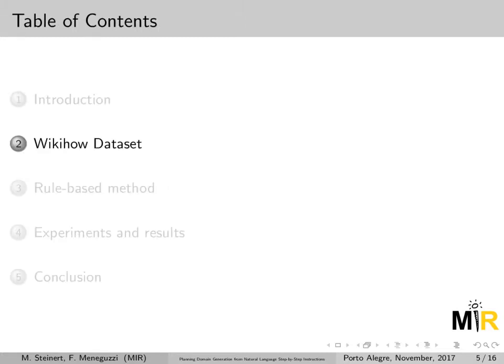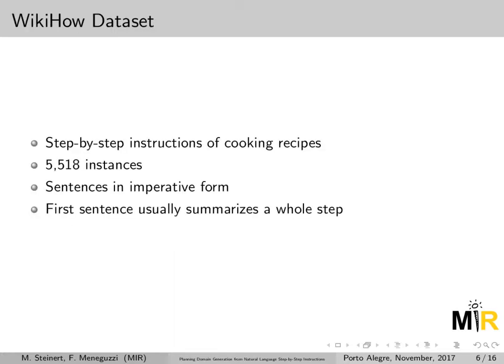To start developing our solution, first we generate a dataset to operate over. We use WikiHow as a data source and we collected a set of cooking recipes. In total we have 5,518 instances of our recipes. Some points to observe in terms of how we write instructions: they are usually written in imperative form, and in the case of WikiHow, usually the first sentence of each step summarizes what's going on in that step.